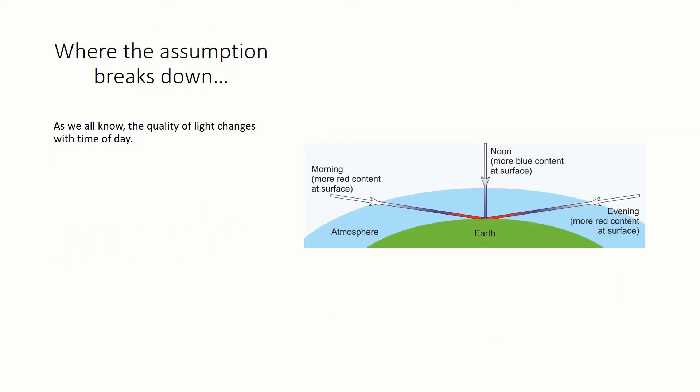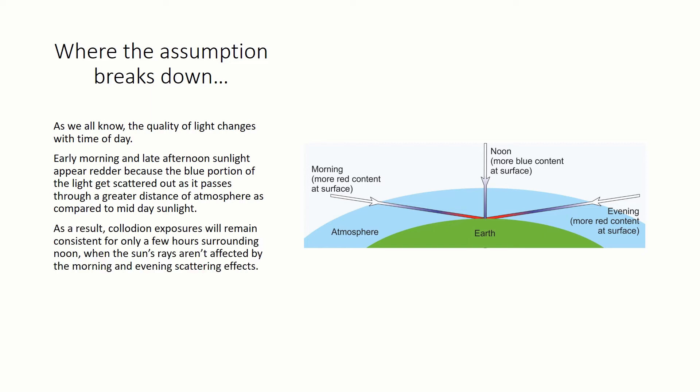For example, we all know the quality of daylight changes with time of day. Early morning and late afternoon sunlight appear redder because the blue portion of the light, the light that collodion loves, gets scattered out as it passes through a greater distance of atmosphere as compared to midday sunlight. As a result, collodion exposures will remain consistent for only a few hours surrounding noon, when the sun's rays aren't affected by the morning and evening scattering effects.